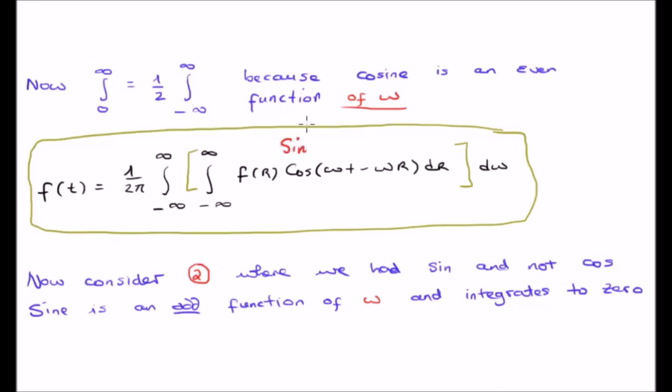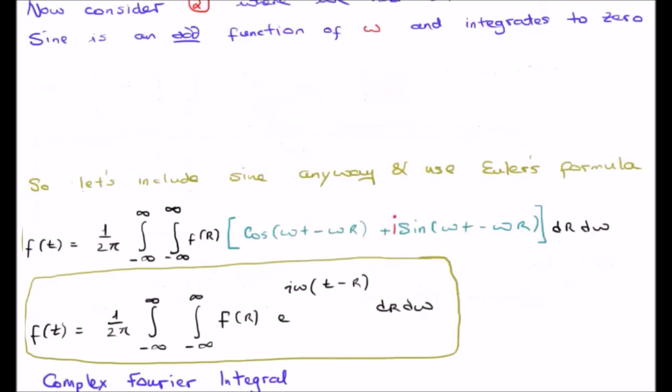And also because sine is an odd function of omega, if we had sine here it will integrate to zero. An odd function of omega would integrate to zero.